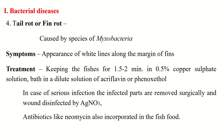Number four: Tail Rot or Fin Rot. This disease is caused by various species of Myxobacteria. It is characterized by the appearance of white lines along the margin of fins, which move gradually towards the base of the fin, making them eroded. The fin rays at first become brittle and are later destroyed completely. The infection can spread onto the body and reach the connective tissue.